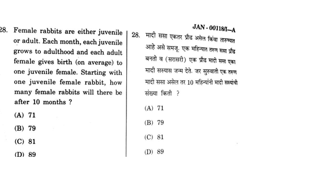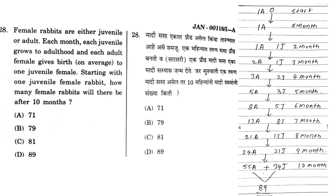This problem is based on the Fibonacci sequence. The way I solved it — I started with one juvenile (J) and it grows to one adult after one month. You can follow the sequence on the screen. After 10 months, you arrive at the answer 89.